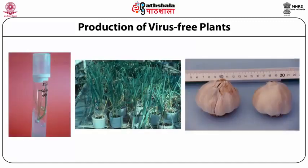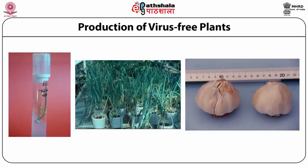An example: garlic plants imported from Japan into New Zealand were intercepted at quarantine because they contained garlic mosaic virus. The quarantine asked the importers to either destroy them or make them virus-free. The plants were taken to the laboratory for shoot tip culture. After raising the plants, they were transferred to the glasshouse and indexed. A large number of these plants were free of virus; those that were not free were destroyed. When the virus-free plants were grown in the field, they produced large A-grade bulbs.